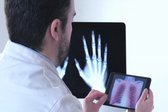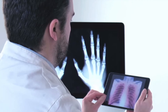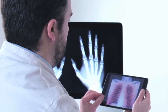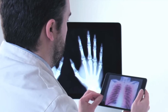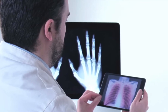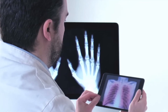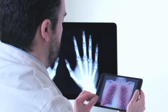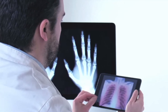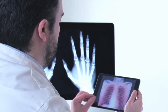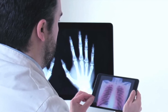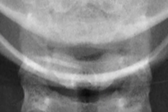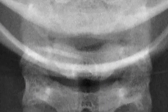A similar kind of principle is used to take absolutely high-precision X-rays. In X-rays, all the radiations just pass through the body except the bones, which act like barriers. This causes a shadow, and that's what is seen on an X-ray sheet.